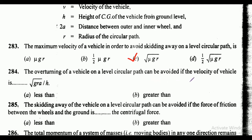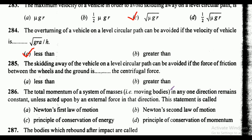Question 284: the overturning of a vehicle on a level circular path can be avoided if the velocity of the vehicle is — less than or greater than — under root of gra upon h? The correct answer is option A, that is less than. Question 285: the skidding away of the vehicle on a level circular path can be avoided if the force of friction between the wheels and the ground is — less than or greater than — the centrifugal force? The correct answer is option B, that is greater than.